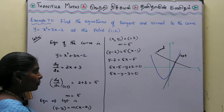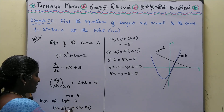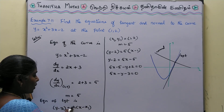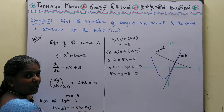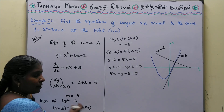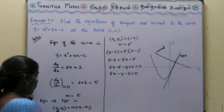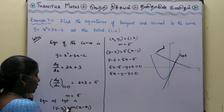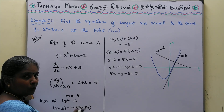Next, the equation of the normal. The formula for the tangent is y - y₁ = m(x - x₁). The slope of the normal is the perpendicular slope, which equals -1/m. So the equation of the normal is y - y₁ = (-1/m)(x - x₁).